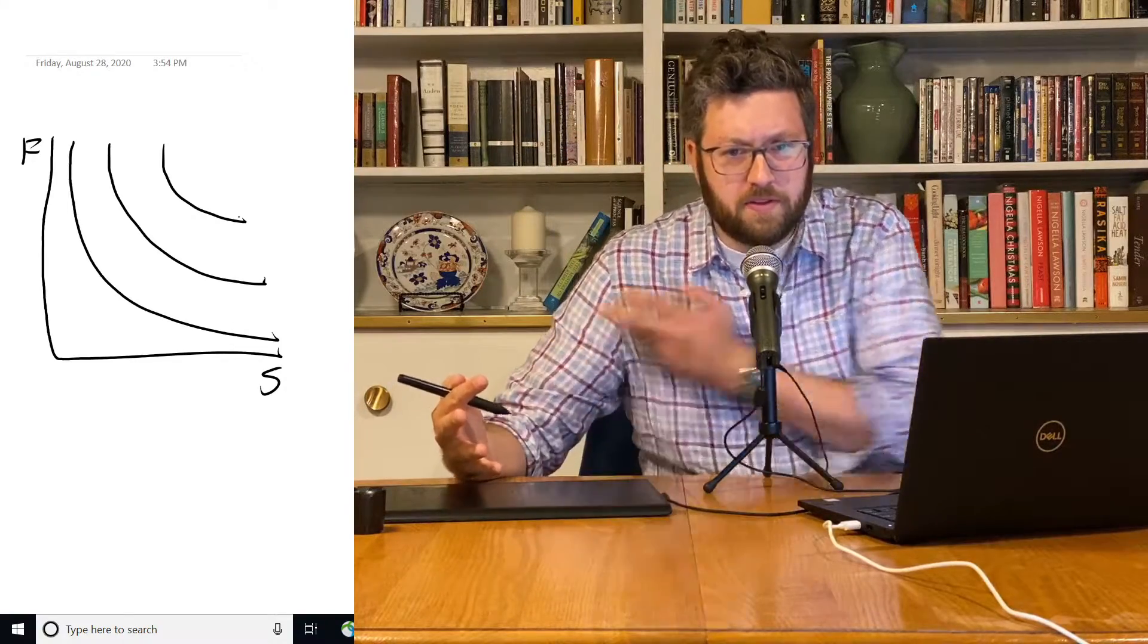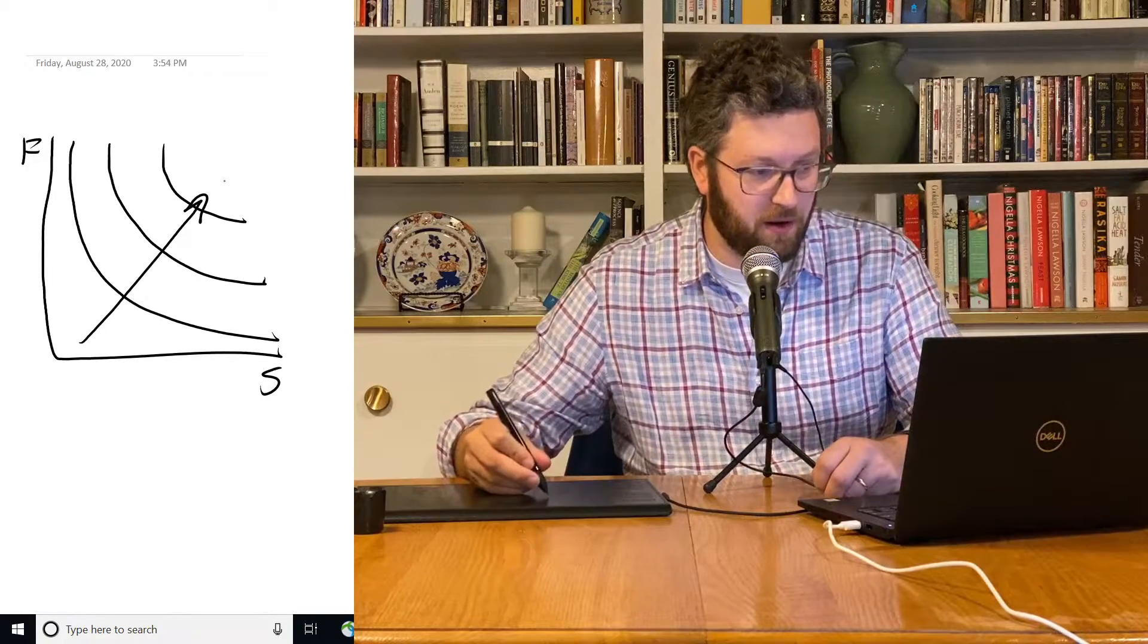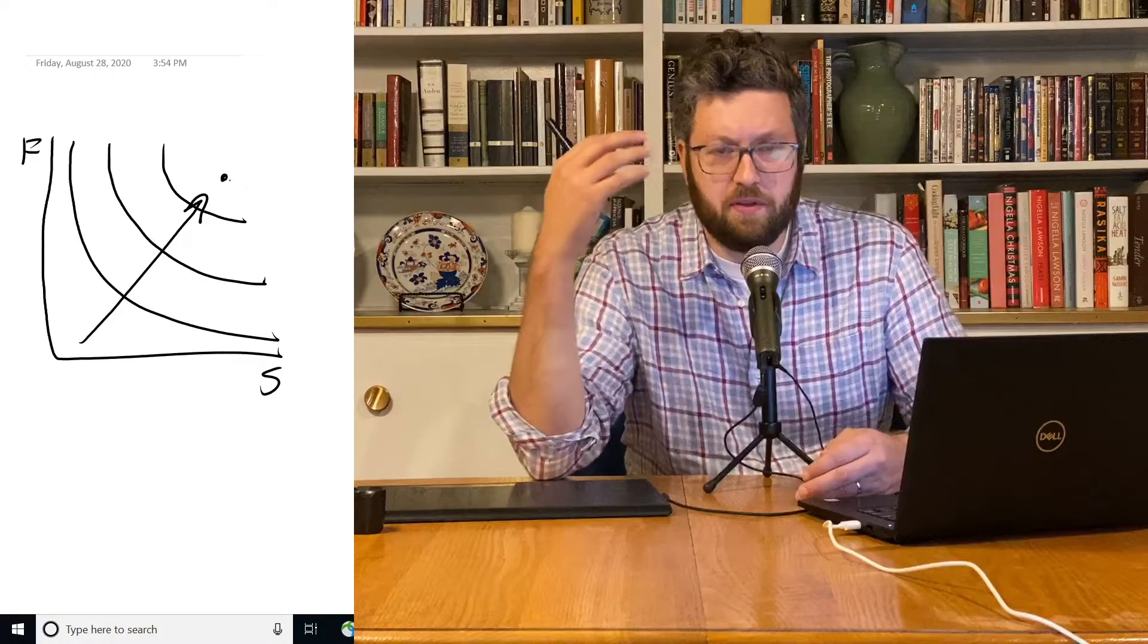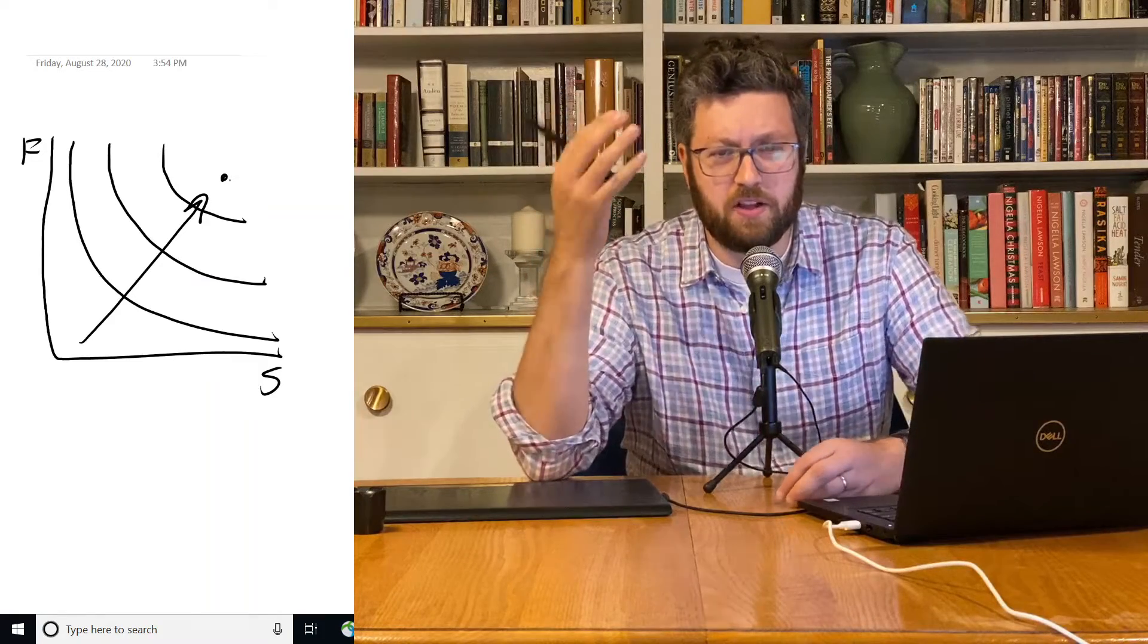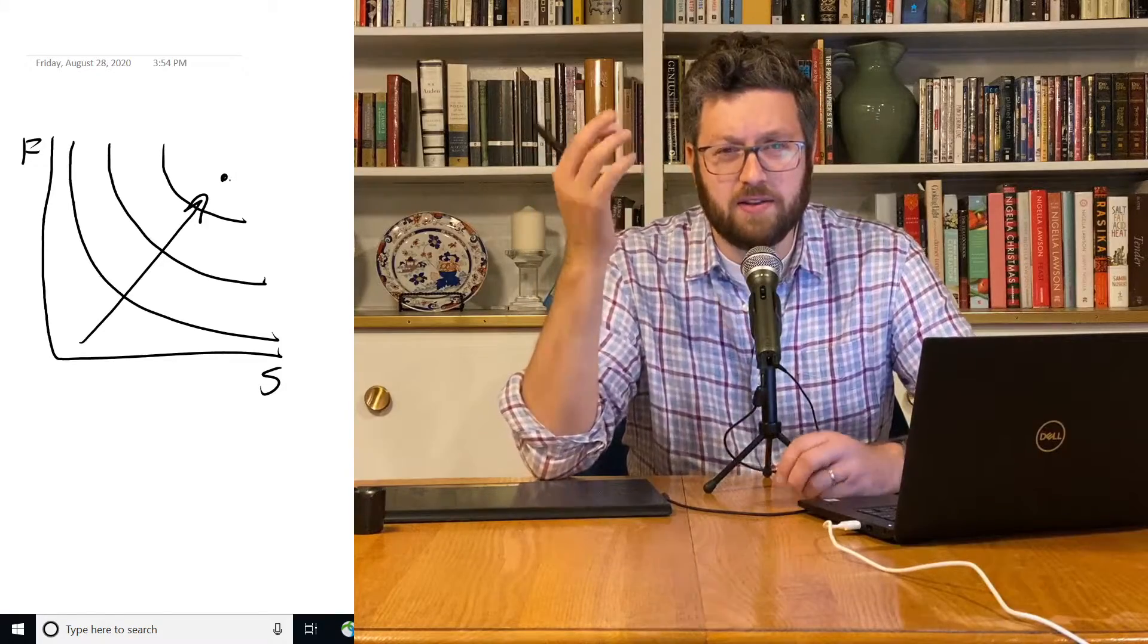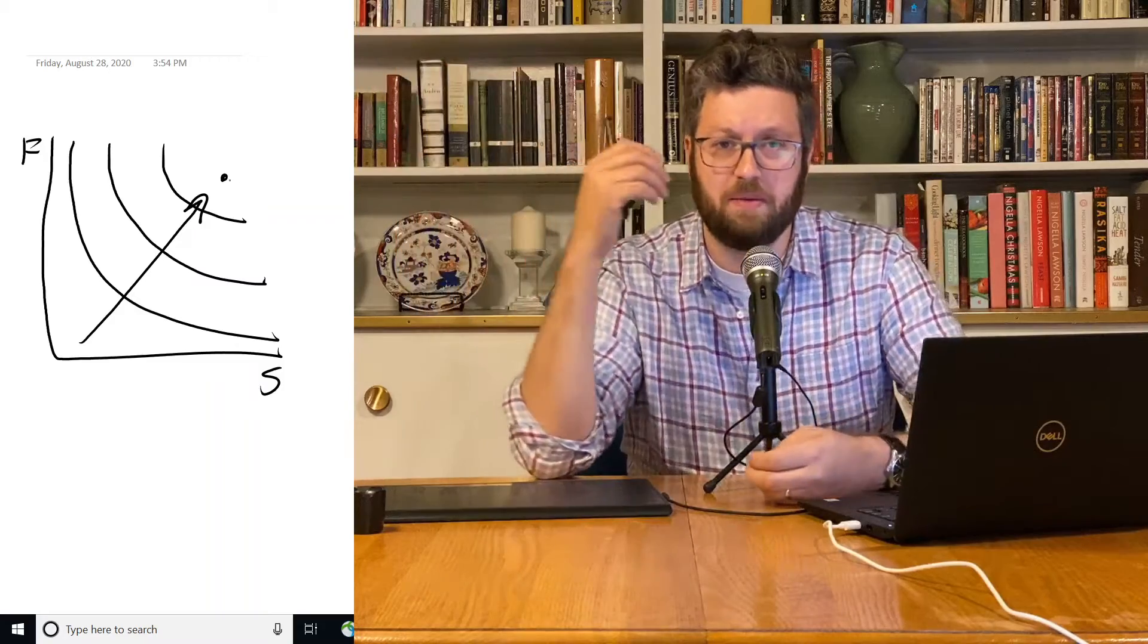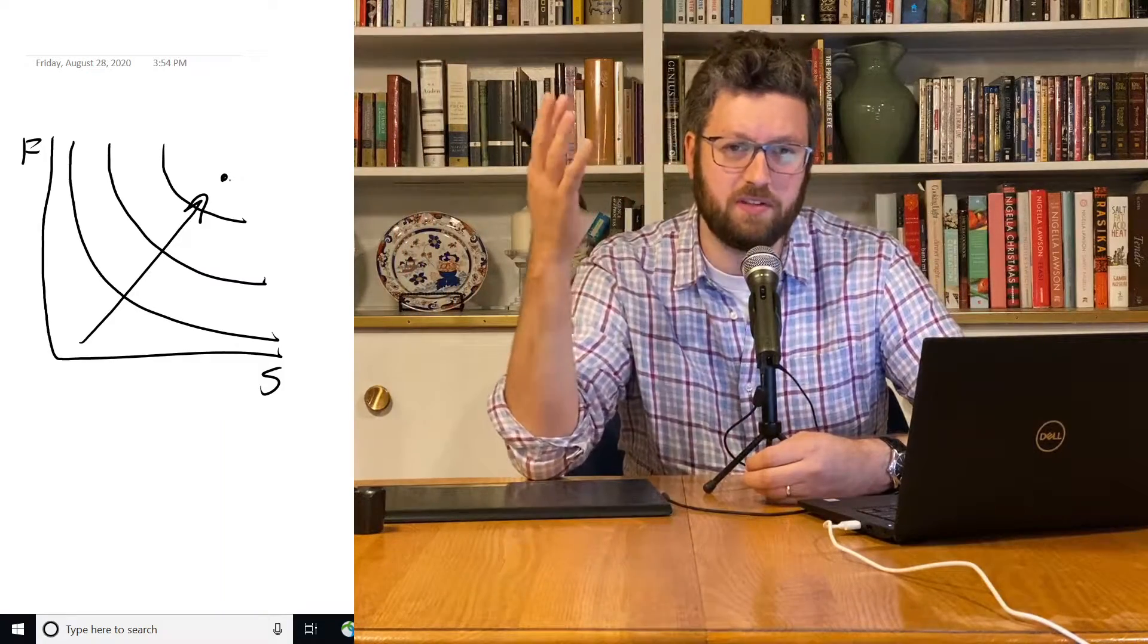So this is their preferences. And in general, people prefer to be up here. We assume that more is better. That's one of the assumptions of these utility functions and preferences. And so given any option, consumers are going to want to get as much of both as they possibly can. But that's not the choice they face.